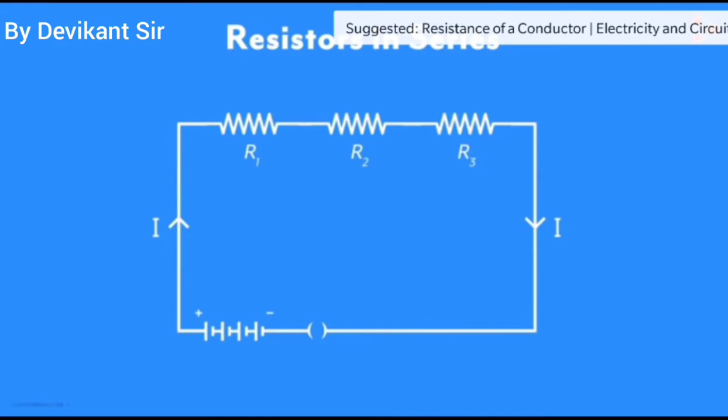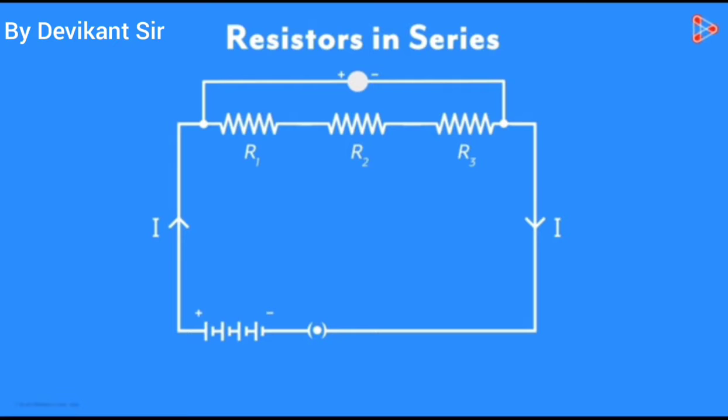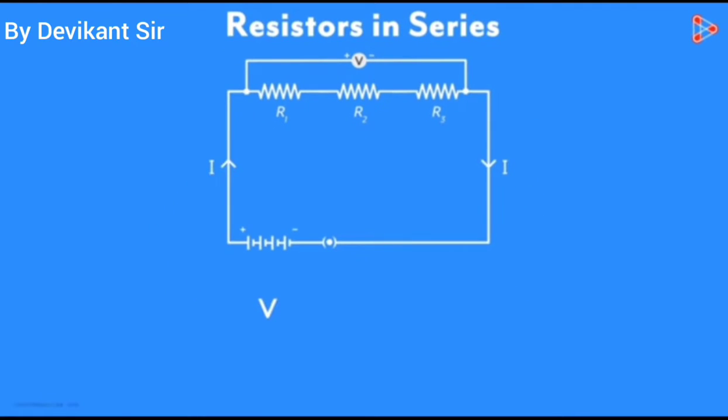Now to find voltage across the combination let us join a voltmeter in parallel with the series combination of these three resistances which gives us the deflection of V. Now to find voltage across each resistance join voltmeter separately across three resistances R1, R2 and R3 which gives us the deflections of V1, V2 and V3 respectively.